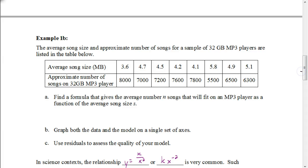Now try this next one on your own. Using the table showing average song size and approximate number of songs that could fit on a 32-gigabyte MP3 player, you can see that as song size increases, the approximate number decreases — so they vary inversely. Set up a general equation where y equals k divided by x, using S for song size and N for number of songs. Pause the video and hit play when you're ready to check your answer.